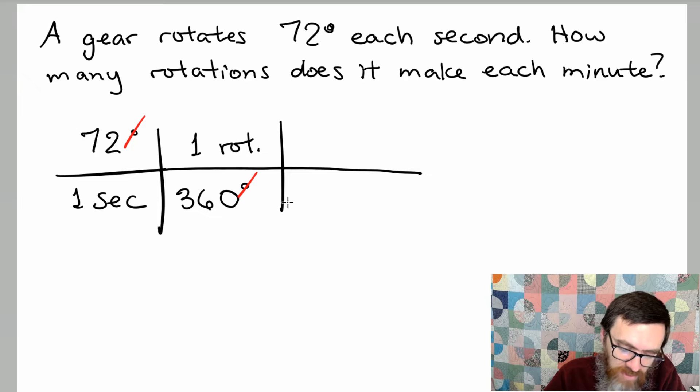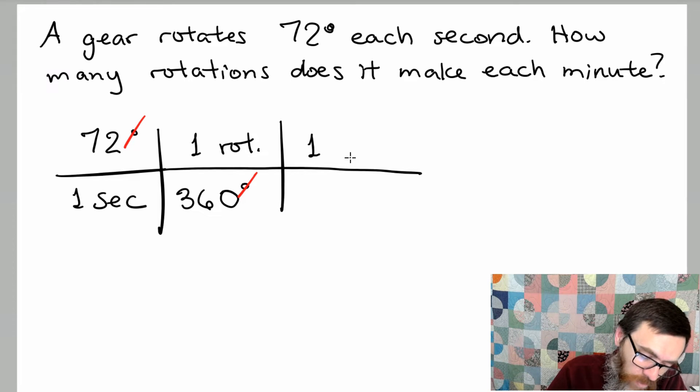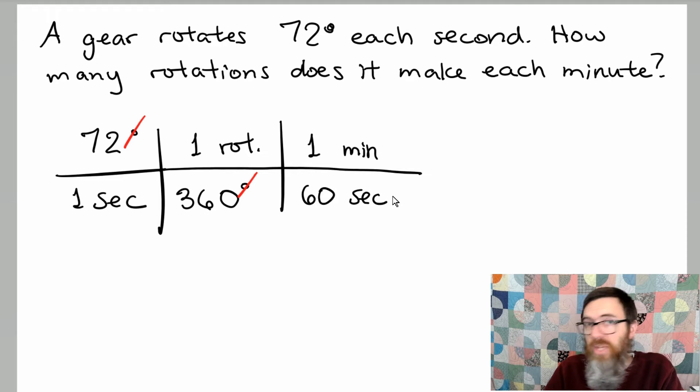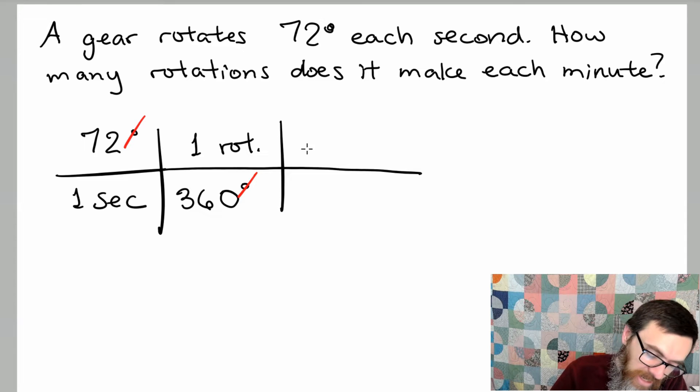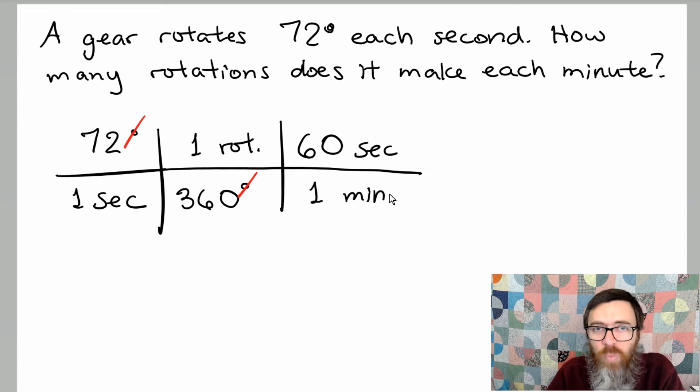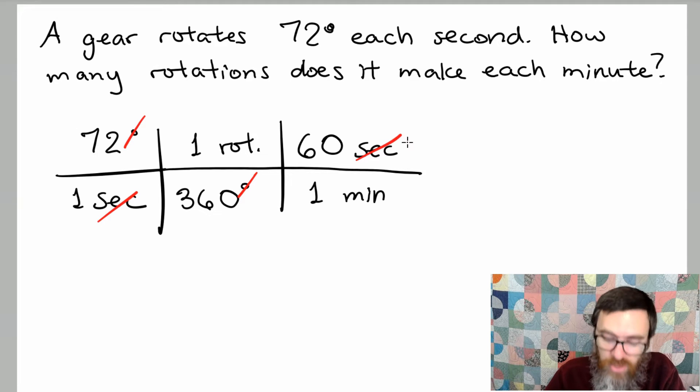Likewise we're trying to get rid of seconds and turn it into minutes. Now the conversion that we know is that for every minute we have 60 seconds. If I write one minute to 60 seconds that is a true conversion. However you'll notice that the units of seconds will not reduce. Instead you want to write like this: 60 seconds for every one minute. It's the same rate except now seconds in the denominator will reduce with seconds in the numerator.